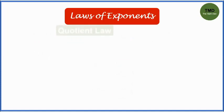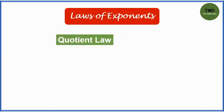The second law is the quotient law. The quotient law states that a raised to m over a raised to n is equal to a raised to m minus n. Just copy the common base a, then subtract their exponents.